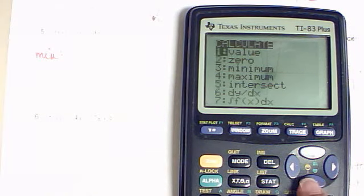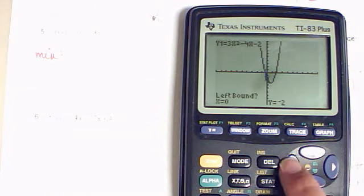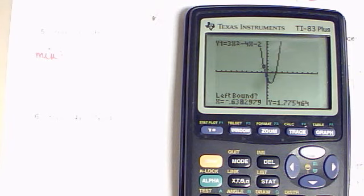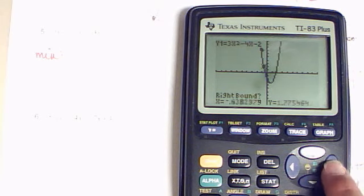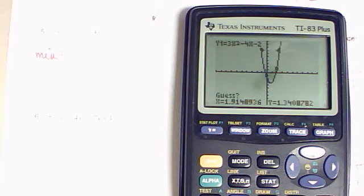We want to know where is that minimum. So we're going to do second trace minimum. We're going to pick a point on the left side of the minimum where the clicker is clicking on the left and hit enter. We're going to move that to the right side of the minimum and hit enter again.